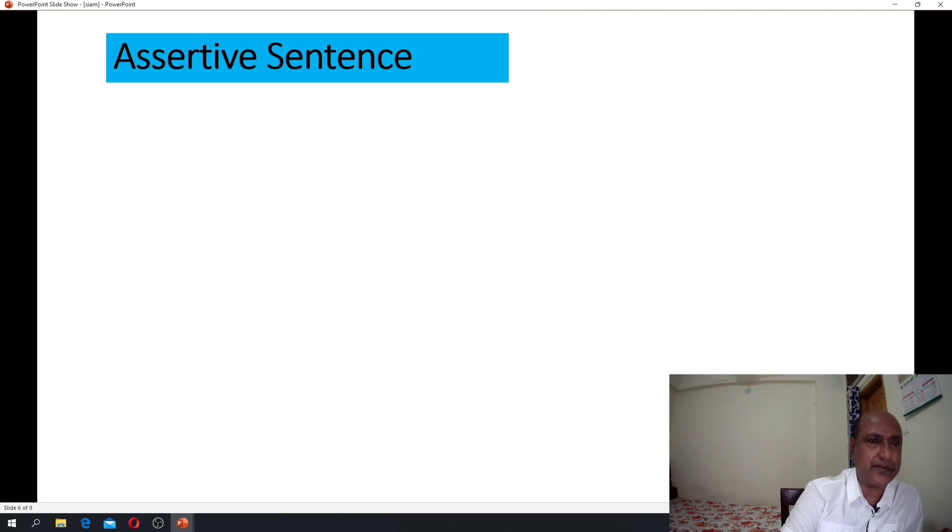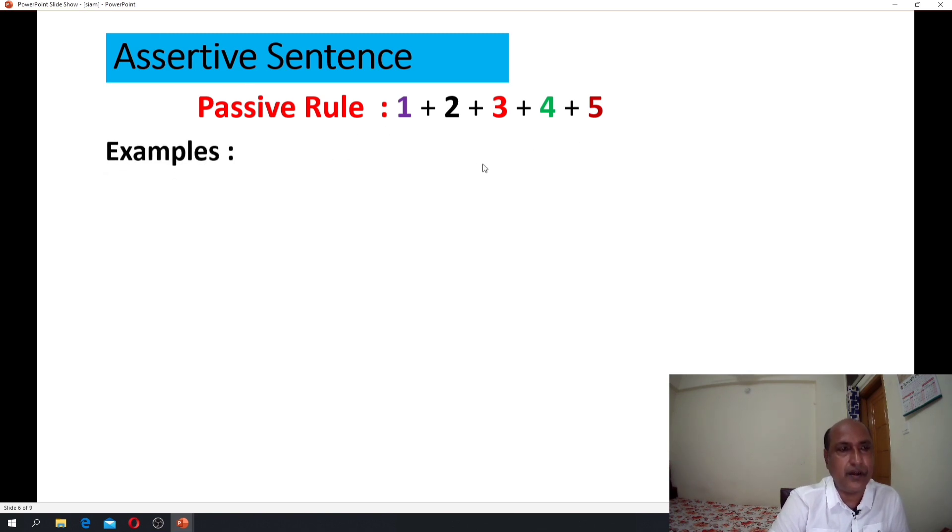Okay, let's go. Assertive sentence. Passive rule: one plus two plus three plus four plus five. This is the sequence activity. Let's see an example here.